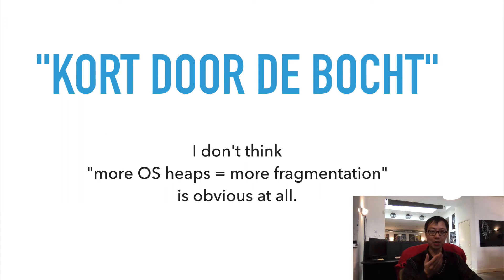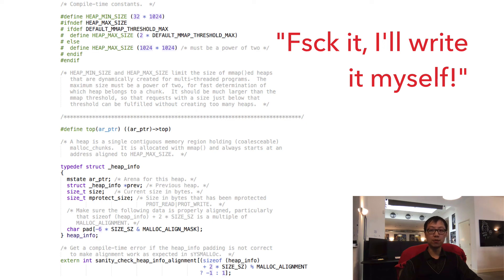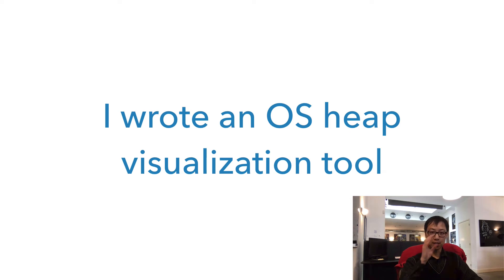There is a Dutch saying I want to apply: kort door de bocht — meaning the statement is too blunt, lacking nuance. I don't think that more OS heaps leading to more fragmentation is an obvious inference at all, even if the official docs say this. To research further, I needed to understand how an OS heap actually looks. Are they fragmented? If so, in what way? Unfortunately, there are no tools to inspect OS heaps, so I began writing a visualization tool myself. I dived into the memory allocator source code to understand its internal layout, then wrote a library that traverses those data structures and writes the layout to a file, and finally a tool that takes that file and compiles a visualization in the form of HTML and PNG images.